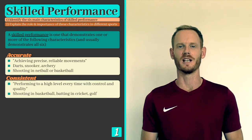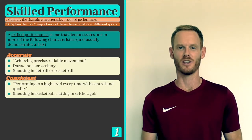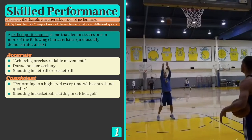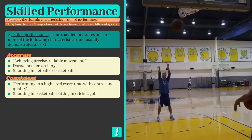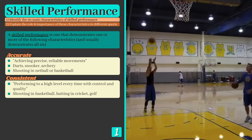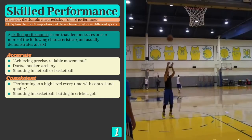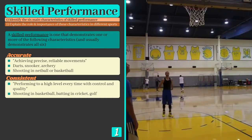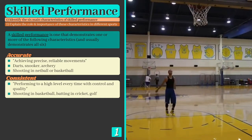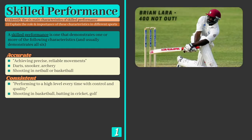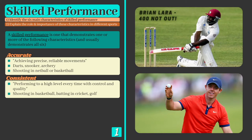Consistent means performing to a high level every time with control and quality. This is all about being able to replicate skills over and over again whilst maintaining quality of movement. It's consistency that allows basketball players to shoot free throw after free throw, helps cricket players to register huge scores and maintain high averages, and keeps a golfer near the top of a leaderboard for the four straight rounds needed to win a Masters tournament.